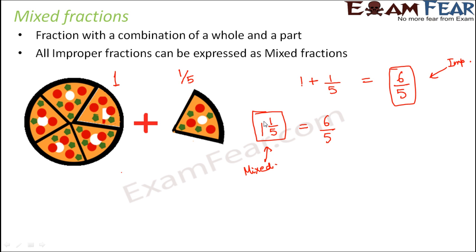Why? Because you have a whole number part. Here, one is the whole number part and one by five is the fractional part. Since both the whole number part and the fractional part are present in the same number, it is called a mixed fraction because it is a mixture of whole number and fractional part representation.